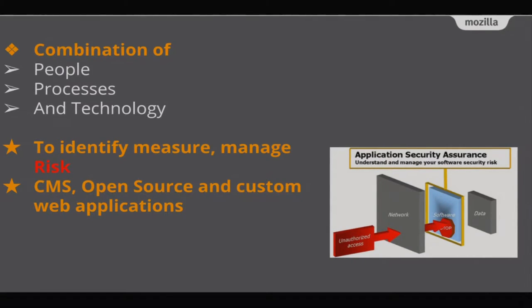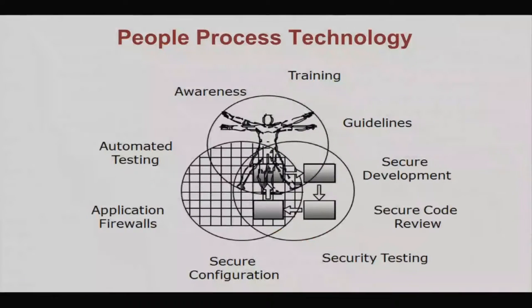Most of us use CMS platforms — open source products like WordPress or Joomla — for our websites and blogs. We believe their systems are very secure, and yes, they are relatively secure, but there are lurking risks. You should use a strong password and protect your admin panel.